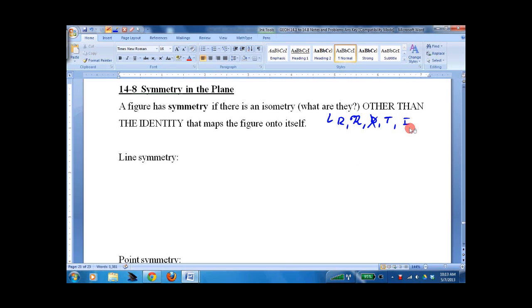So you just say it's itself, but no, that doesn't really help. The map's figure onto itself. So we have several different types of symmetry.